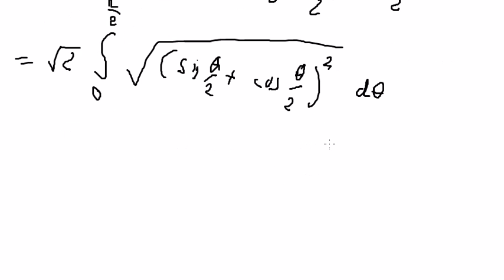The square and square root cancel. And we get sine theta over 2 plus cosine theta over 2.